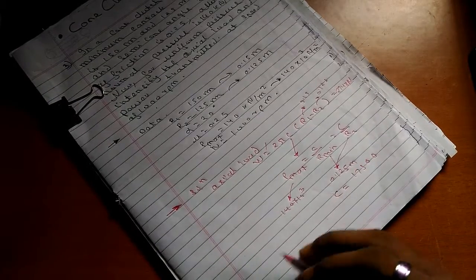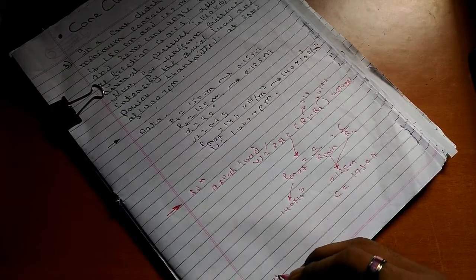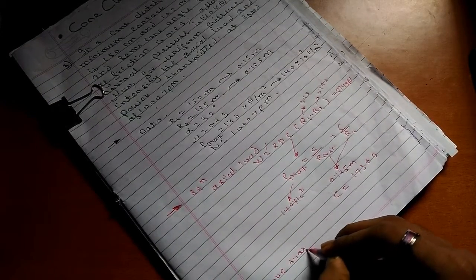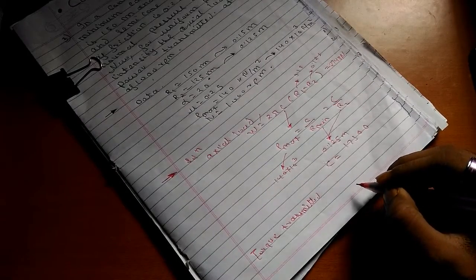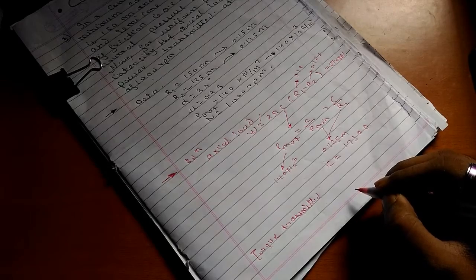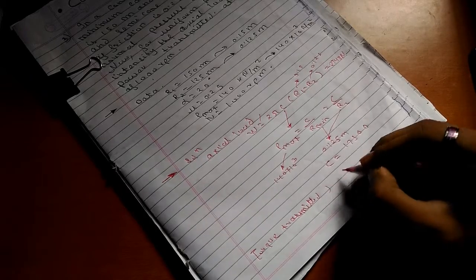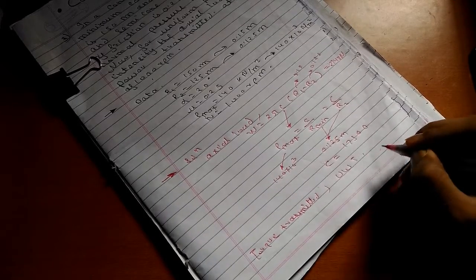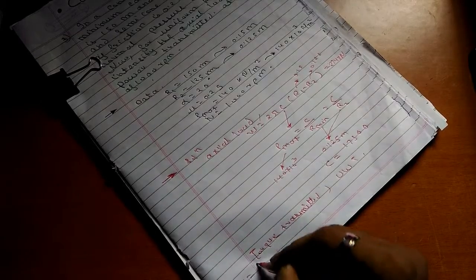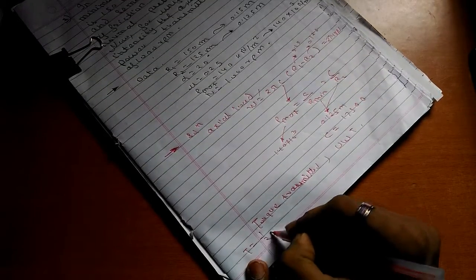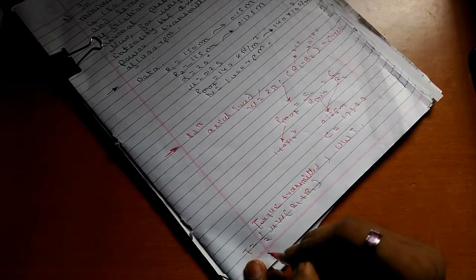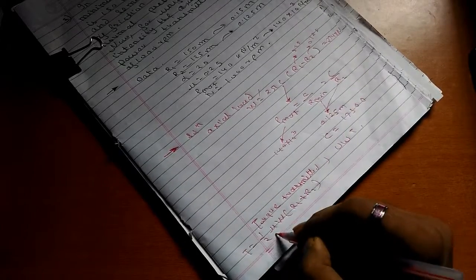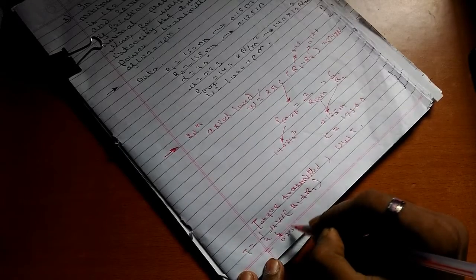Now we need to find the torque transmitted by uniform wear theory. The formula is torque equals half mu W times (R1 plus R2). We know mu equals 0.25 and W equals 2748.